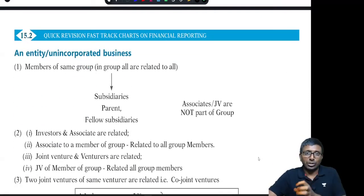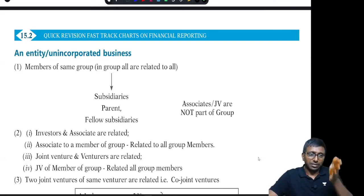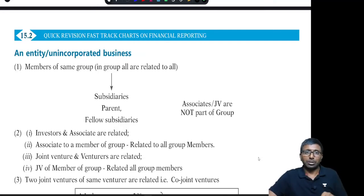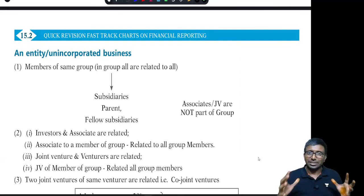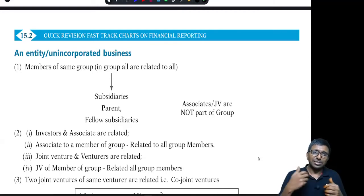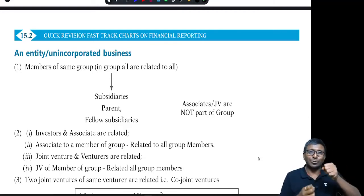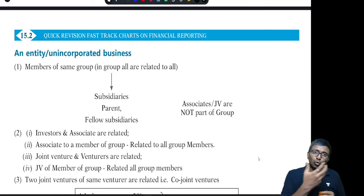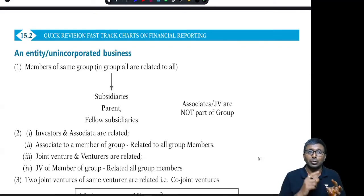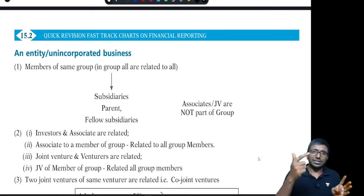Let's look at the entity or unincorporated business category. Another entity can be related to my entity under the following circumstances. First, it is a member of the same group. Group means the parent and its subsidiaries — parent, subsidiary, sub-subsidiary, co-subsidiary, etc. Only subsidiaries where the parent has control directly or indirectly are part of the group. Associates and joint ventures are not part of the group.